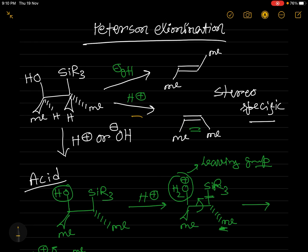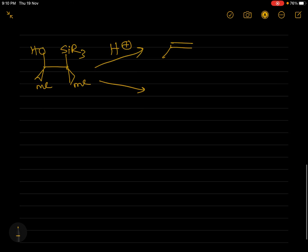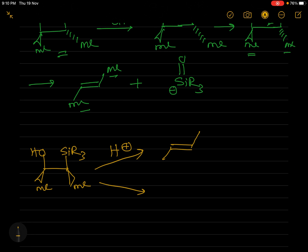So, when we previously used acid with the anti-starting material, we got the cis product. But with the syn starting material and acid, we get the trans product. If we use base with the syn starting material, we get the cis product. Depending on whether you use acidic or basic conditions, and whether your starting material is anti or syn, you will get different outcomes. That is the summary of this video. Thank you for watching.